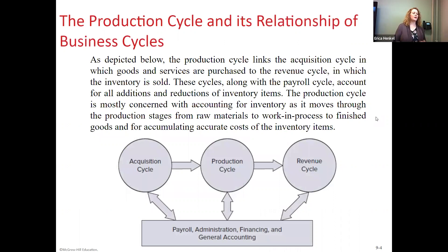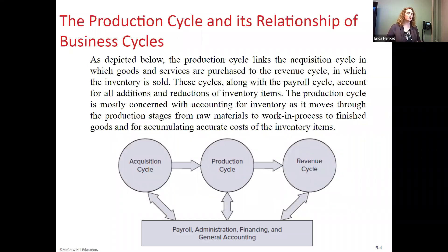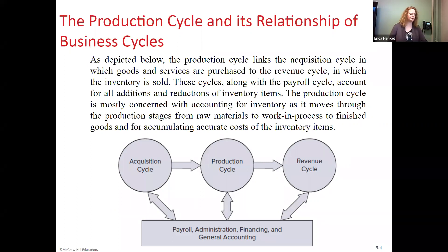The three big activities in the organization are: the acquisition cycle, where we are making purchases — we talked about those in a prior chapter. The production cycle is what we're looking at now, which is where we create the goods and services that we would be selling to customers. And then the revenue cycle, which we've already looked at, is where we are selling those goods and collecting the cash. All of those interact with payroll, administration, financing, and general accounting at every step of the way. We talked about payroll more in Chapter 8.